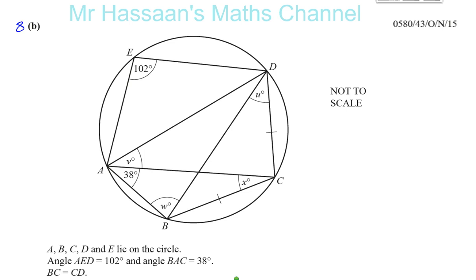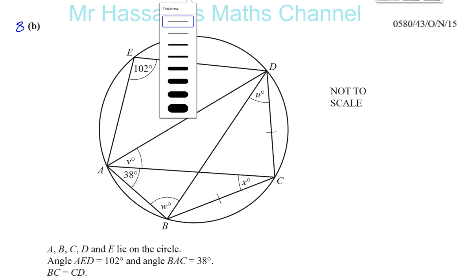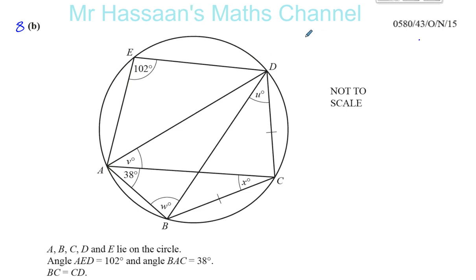Okay, so now we've got 8 part B, angles and circles, which some students do find a bit confusing. This is something we have to really try to brainstorm with, and you'll notice that maybe some people think of things in one particular way and others in other ways, because with these types of geometry questions — angles and circles — there are normally more than one way of answering a question.